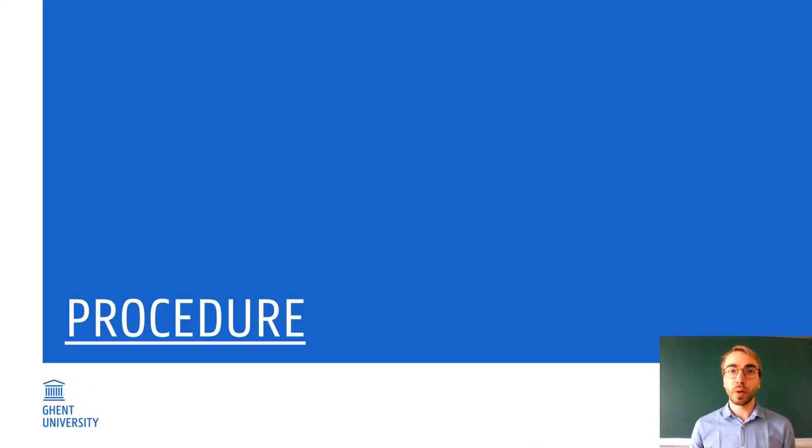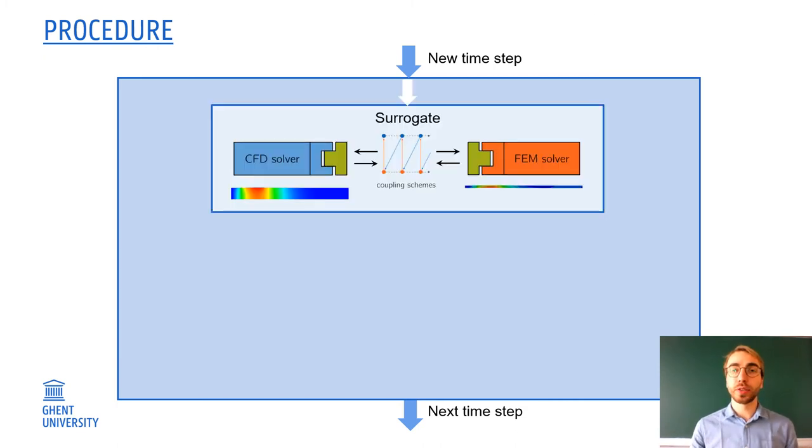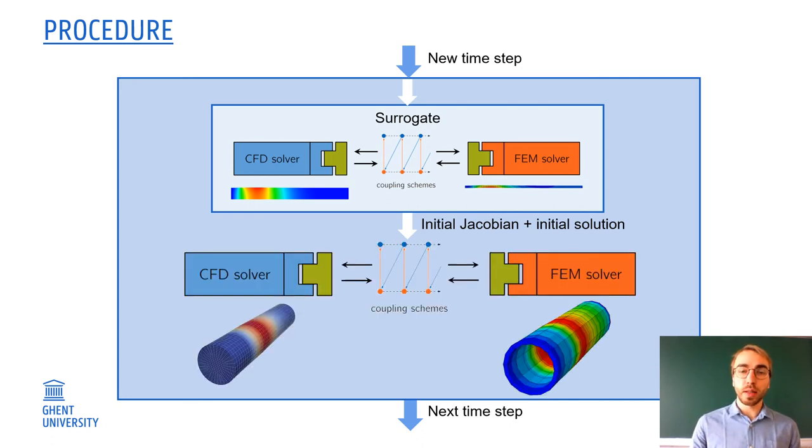So now that I've explained the motivation of why we can do this, I'll guide you through a high-level procedure of how this can be achieved. Consider we have a new time step. The first thing we'll do is do a surrogate calculation. Let's consider once more the three-dimensional tube with pressure pulse. Then, for example, we can use this 2D axisymmetric simulation as a surrogate model. We have a surrogate flow solver and a surrogate structure solver, and a coupling scheme which couples these two surrogate solvers. From this surrogate calculation, we'll obtain a Jacobian which is used inside of that coupling, and also a solution which can then be used as initial values for the real calculation. And then the modes which are calculated using a black box approach in this real calculation can be added to our initial Jacobian in order to accelerate the coupling.